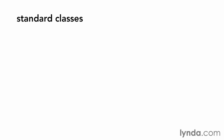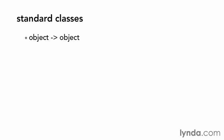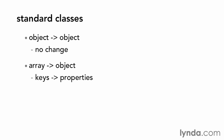A standard class is the result of typecasting a value of any type to an object. It won't have any methods, but it will have values. If you typecast an object to an object, it will not be modified. If you typecast an array to an object, the result will be an object with properties named for the keys of the array, with values corresponding to the array values. Let's clean up the demo file and remove the copy and clone test code.